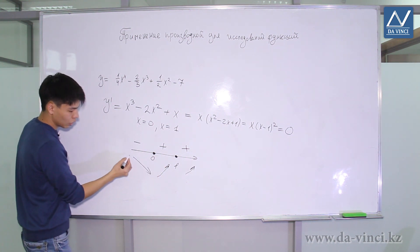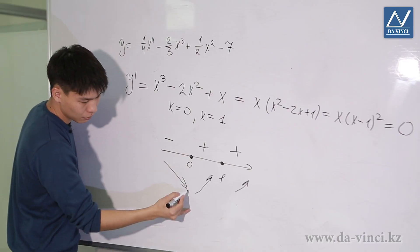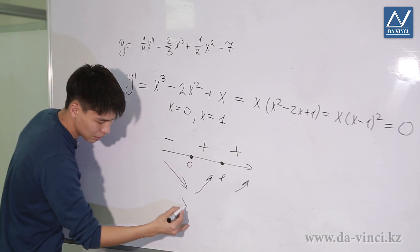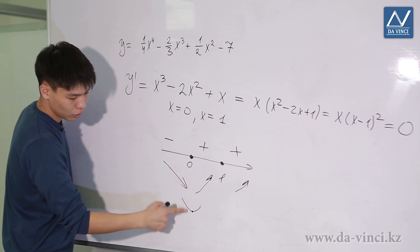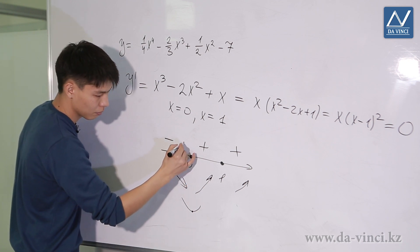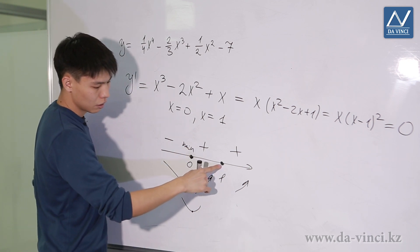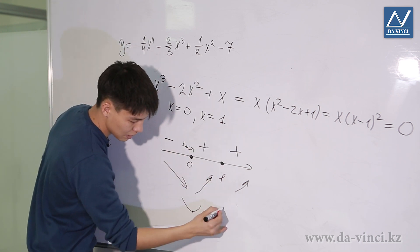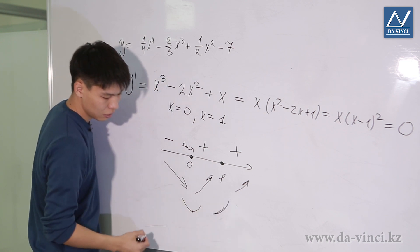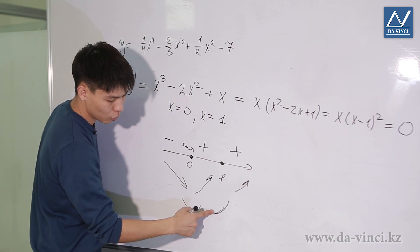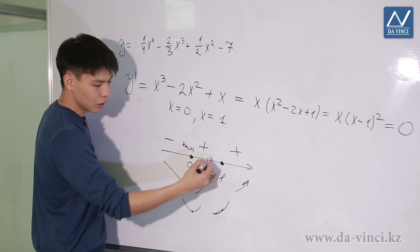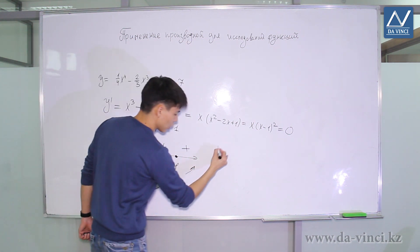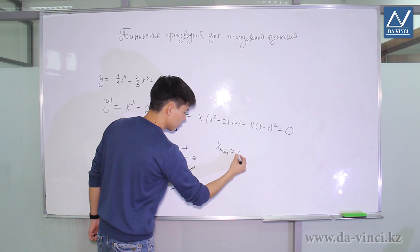Let's mark points 0 and 1 on the coordinate line and determine the sign of the derivative on each interval. We get a minus on the left interval, a plus in the middle, and a plus on the right. At point 0, the function decreases up to it and increases starting from it — so point 0 is a minimum. At point 1, the function increases both before and after — so point 1 is not an extremum. Therefore, this function has only one extremum: x_min = 0.